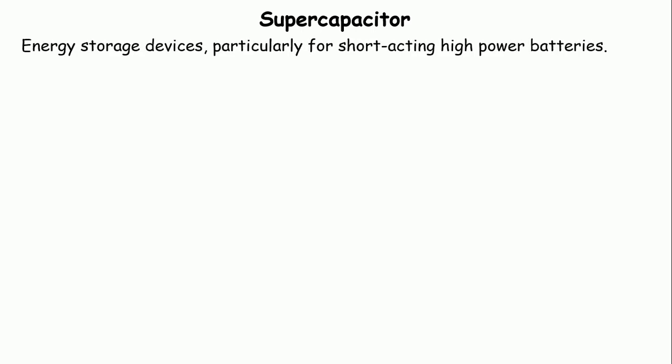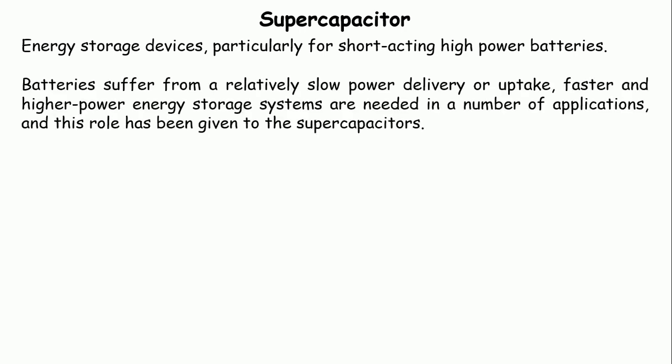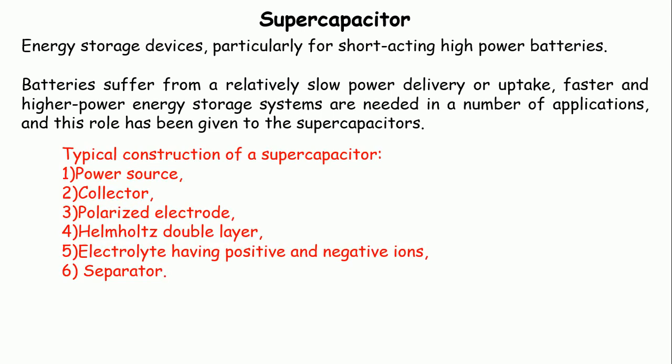Next is the super capacitor. It is an energy storage device particularly useful as a short-acting high-power alternative to batteries. Batteries suffer from relatively slow power delivery or uptake, but many applications need a high-power energy storage system — that is where super capacitors are used. The construction of a super capacitor has six components: a power source collector, polarized electrode, Helmholtz double layer, electrolyte having positive and negative ions, and a separator.